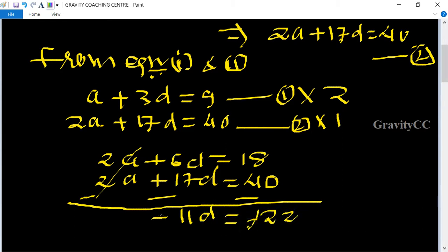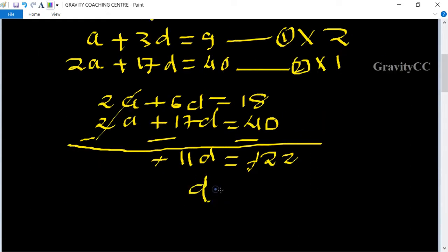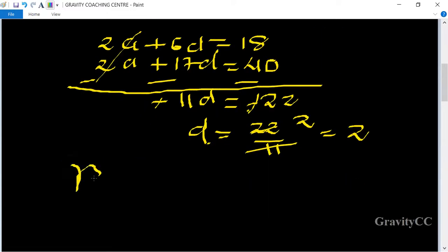Minus and minus cancel, so d = 22/11, and 22 divided by 11 is 2, so d = 2. Putting...